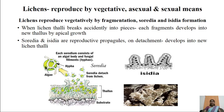Last session we studied about these specialized structures called soredia and isidia, which are usually developed on the surface of the lichen thallus. Soredia and isidia are reproductive propagules which on detachment from the lichen thallus develop into new individual lichen thalli. Soredia are nothing but algal cells covered by a filament of fungal hyphae, formed in large numbers on the upper surface of the lichen thallus.